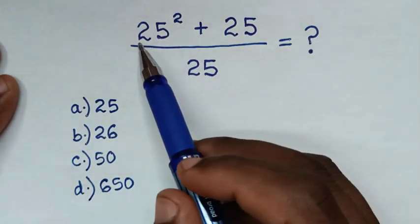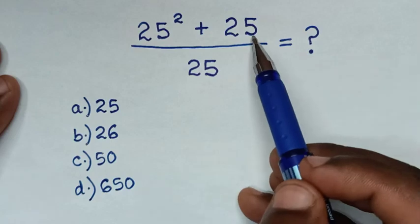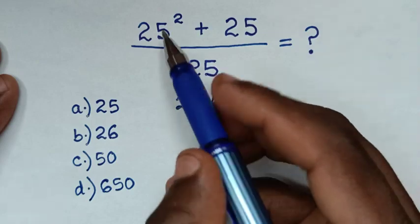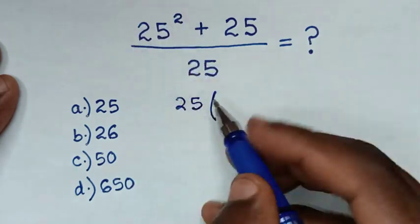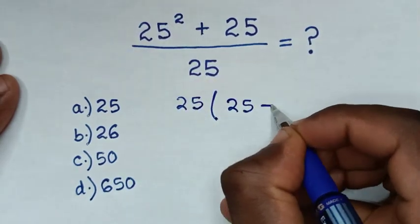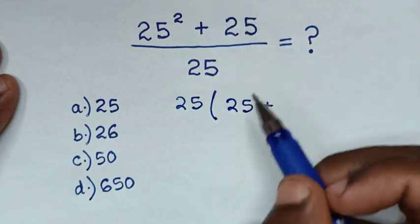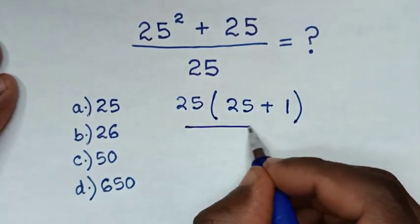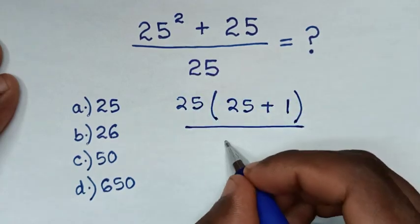Now, from here in the numerator, 25 is common, so I'll take 25 out of bracket. Then 25 square divided by 25 is 25, then plus 25 divided by 25 is 1 bracket, then over this 25.